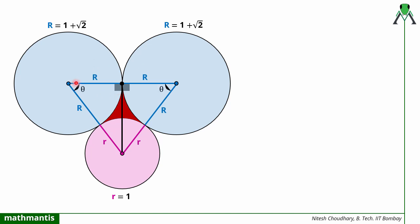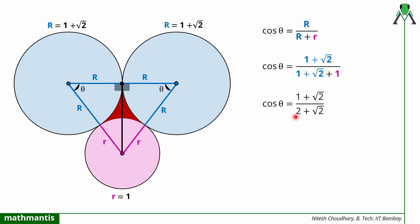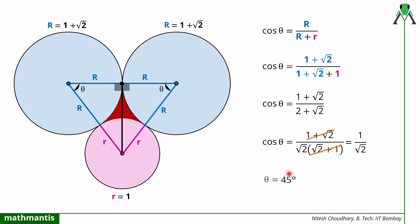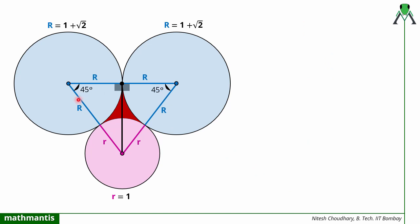Now I can easily find this angle theta using trigonometry. Cos theta equals base upon hypotenuse, which is capital R upon (capital R plus small r). Capital R is 1 plus root 2, so this is (1 + root 2) upon (2 + root 2). From 2 + root 2, you can take root 2 common, giving root 2 times (1 + 1/root 2), which simplifies so that the (1 + root 2) terms cancel out. So cos theta equals 1 over root 2, meaning theta is 45 degrees.